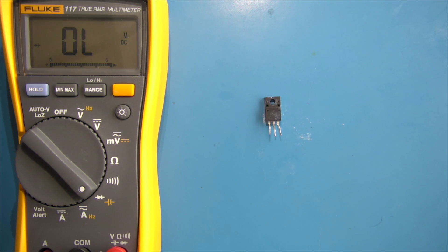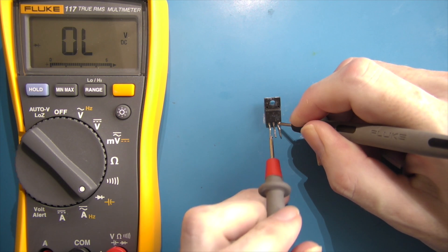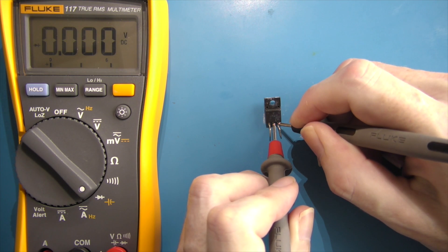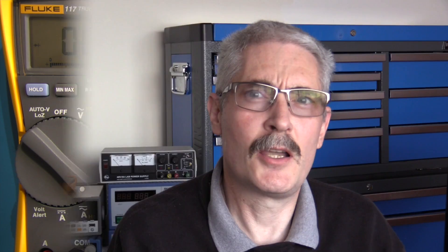This is another IGBT I removed from the board. I place my black lead on the emitter and my red lead on the collector, and I have a short. Placing my red lead on the gate, I also have a short. This IGBT needs to be replaced.